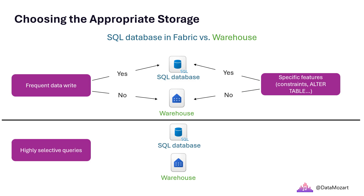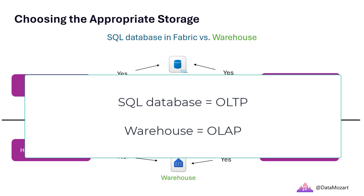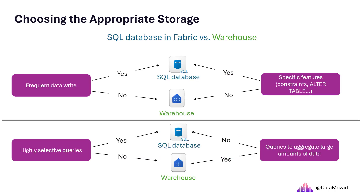In addition, if you are writing highly selective queries, SQL database is a better option than the warehouse. Last but not least, in case you need to write a query that aggregates large amounts of data and performs aggregate functions over large amounts of data, then for that scenario warehouse is more suitable. To summarize the key difference: SQL database in Fabric is suitable for OLTP workloads, whereas a Fabric warehouse is a good fit for OLAP scenarios.